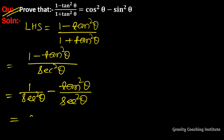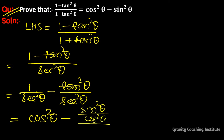1/sec²θ is equal to cos²θ. And we know that tan θ = sin θ / cos θ, so tan²θ/sec²θ becomes (sin²θ / cos²θ) divided by (1/cos²θ), and the cos²θ terms cancel.